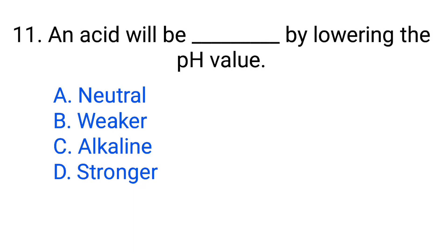Question number 11. An acid will be stronger by lowering the pH value. Option A: Neutral. B: Weaker. C: Alkaline. D: Stronger. The correct answer is option D, Stronger.